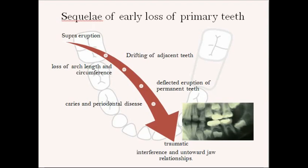What happens once we have early loss of a primary tooth? First, it leads to supra-eruption of the opposing tooth. It then leads to drifting of adjacent teeth — either mesial migration from the permanent molar or second primary molar if the first primary molar is lost, or distal migration of the canine or laterals. This causes loss of arch length and circumference, deflection in the eruption of permanent teeth, caries and periodontal disease, and lastly a traumatic interference and untoward jaw relationship.